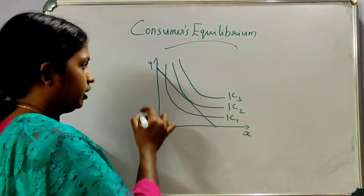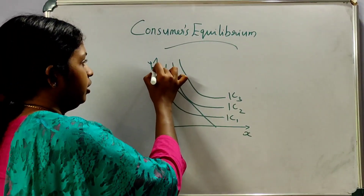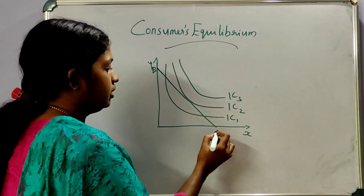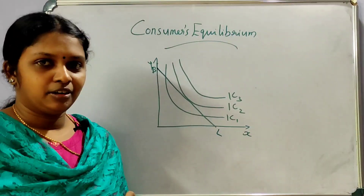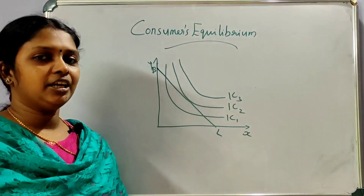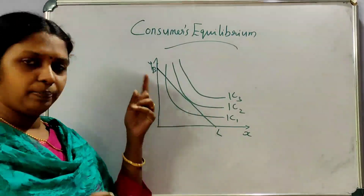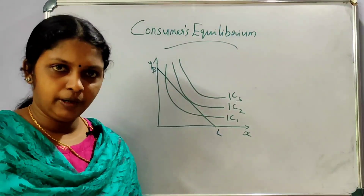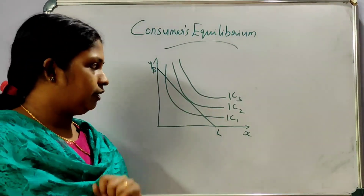Here is the budget line — also called the price line. Budget line is price line. If we need to place the price line, or PL, we refer to it as the budget line.